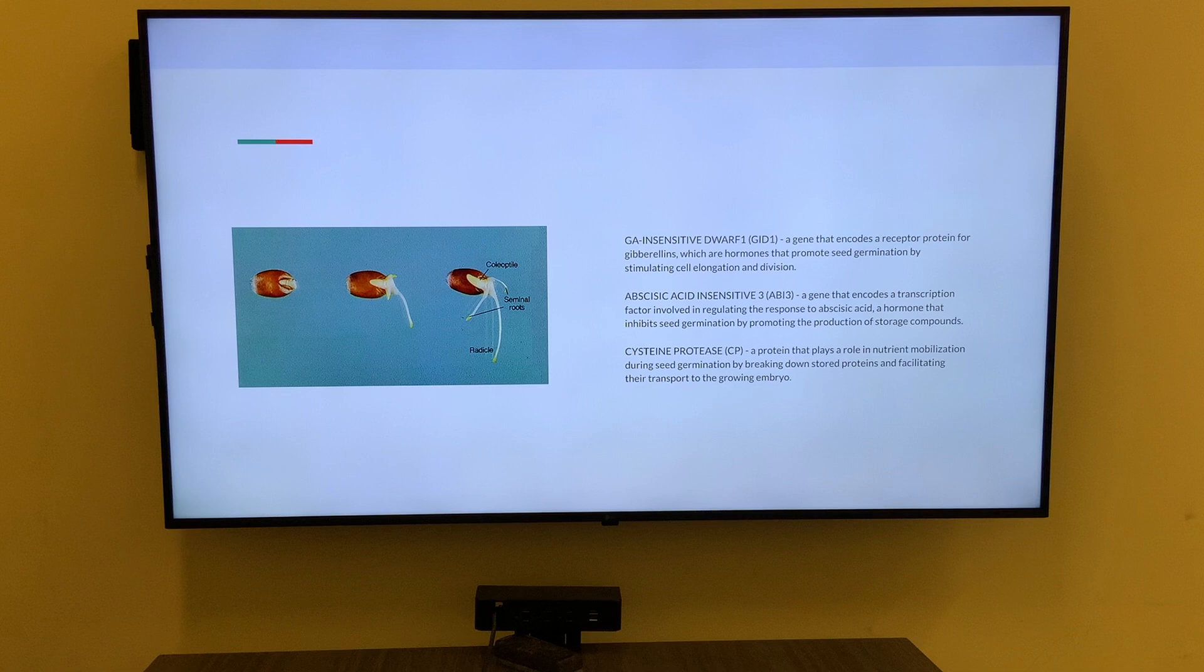At the cellular level, seed germination involves the differentiation and proliferation of cells, as well as changes in cell structure and function. For example, during radicle emergence, cells in embryonic roots differentiate into specialized cell types that allow the roots to penetrate the soil.